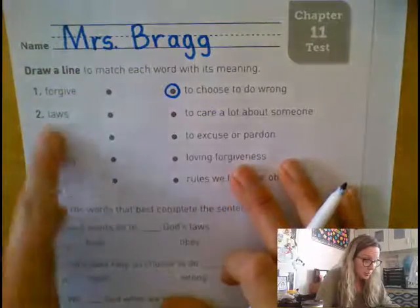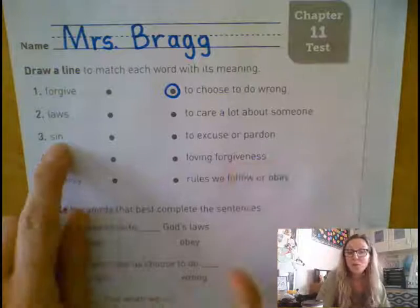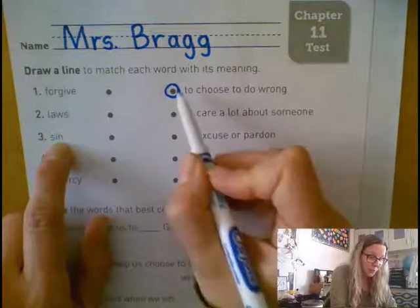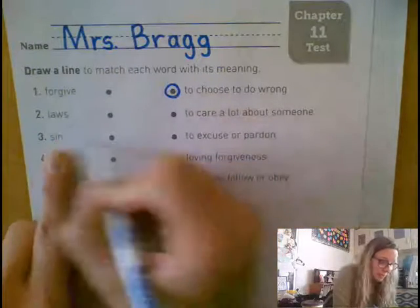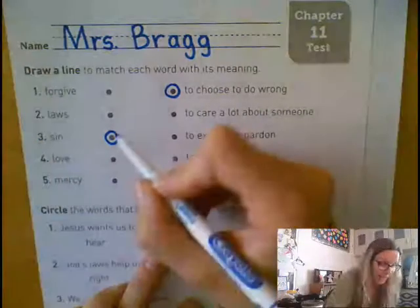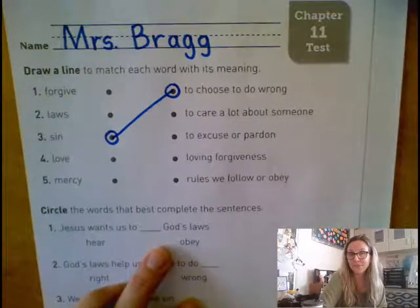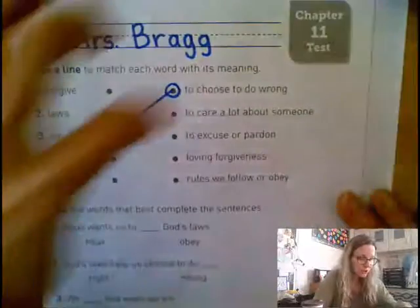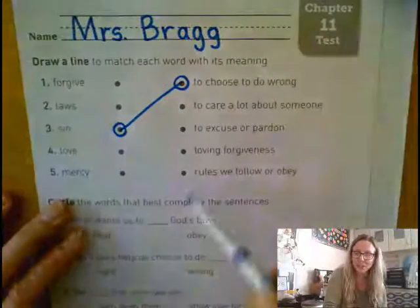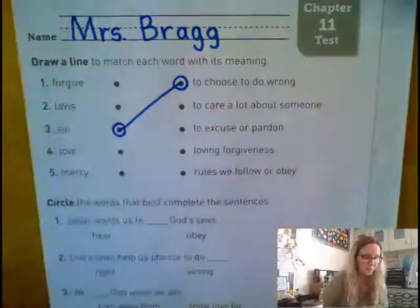Which of these words is when we choose to do wrong? We've talked a lot this week, and we know that that is sin. When we sin, we are choosing to do something that we know is wrong. So I put a circle around 'to choose to do wrong' and a circle around the dot next to sin. When I connect my dots, I know I'm connecting the right word to the right definition. Drawing the shapes helps — if you're just drawing a line, you can get confused along the way and forget where you were going and get marked wrong when you really knew the answer.